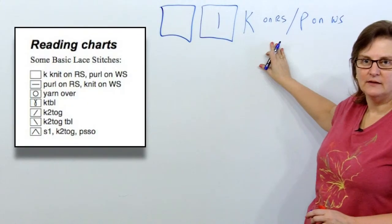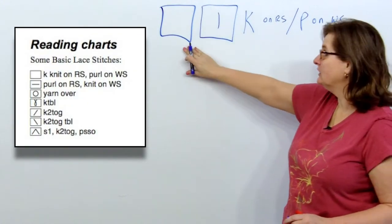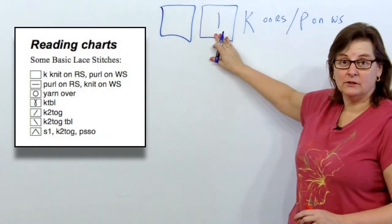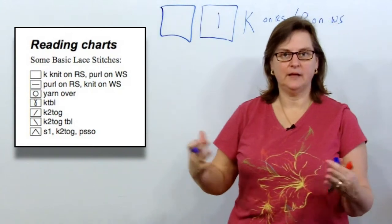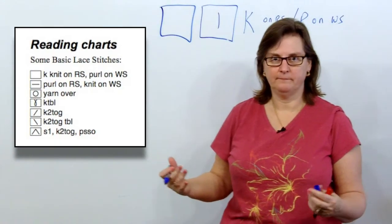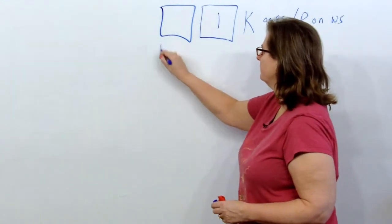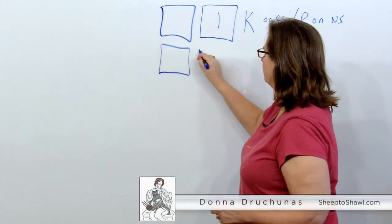I like the plain one better than the vertical line because then the rest of what you're going to knit, the other symbols, stand out more in the chart. The second symbol we'll look at is the purl symbol.